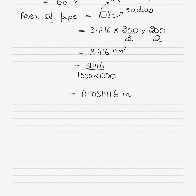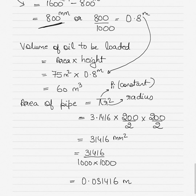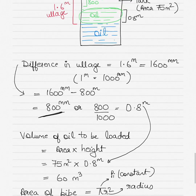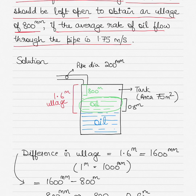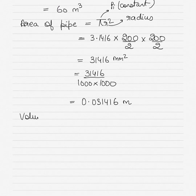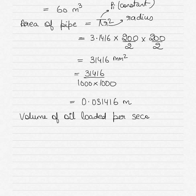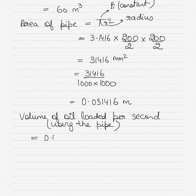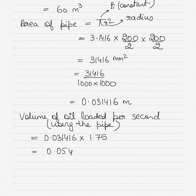The rate of flow of the pipe is 1.75 meters per second, meaning it can load 1.75 meters per second. So the volume of oil loaded per second using the pipe is the area of the pipe multiplied by the rate: 0.031416 × 1.75 = 0.054978 cubic meters per second.